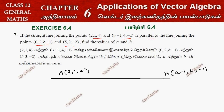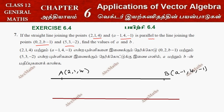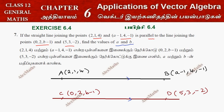This line is parallel to another line. We have two more points. One point is C, which is (0, 2, b minus 1), and the other is point D. Find the values of A and B — these are the unknowns.